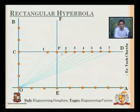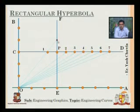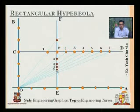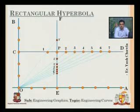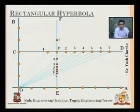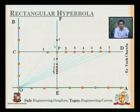Now I'll mark the points: this is the first point 1', this is 2', 3', 4', 5', 6', and 7'. We have these points up till 7' marked on EF.